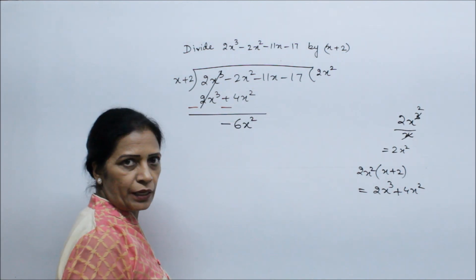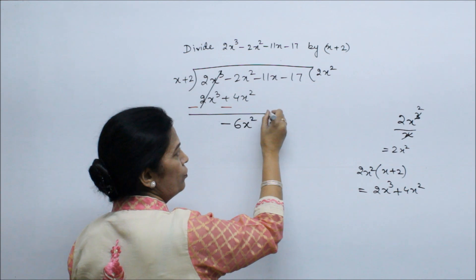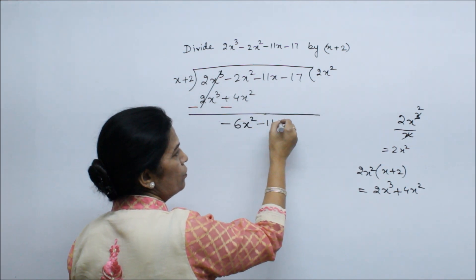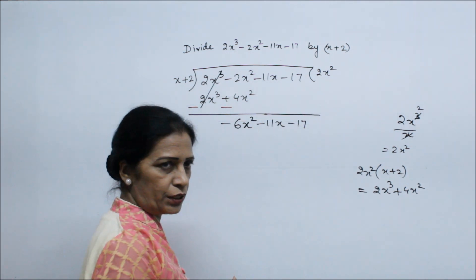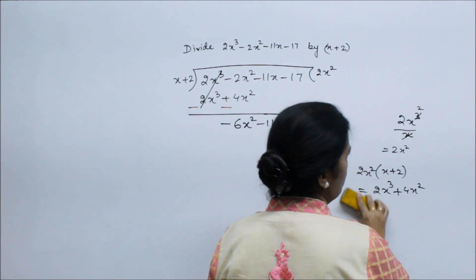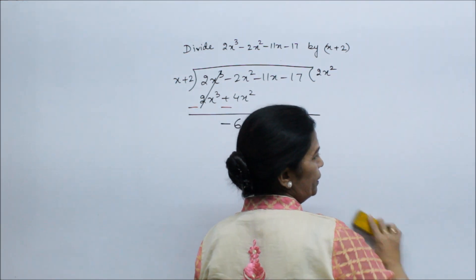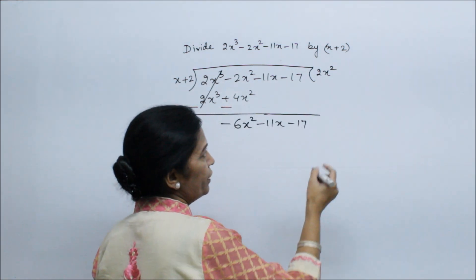We bring down all the numbers, so -11x and -17. Now we will find the next term.